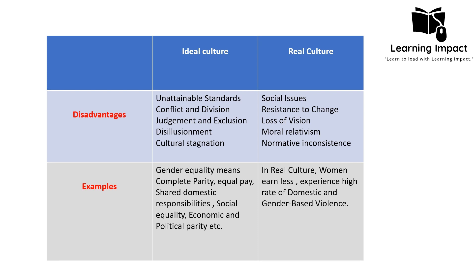In the case of real culture, it can sometimes perpetuate harmful practices in society, and it can make resistance to change. It can lead to a loss of vision, because real culture can move in any direction — not necessarily toward the ideal. It can lead to moral relativism, where morally questionable practices are still practiced in society, and to normative inconsistency, where norms practiced by individuals may change according to the situation, as real culture is more dynamic.